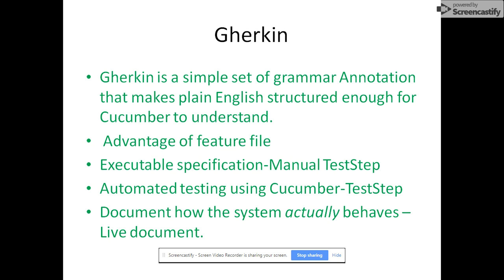Gherkin is a simple set of grammar annotations that make plain English structured enough for Cucumber to understand. There are rules: you write Given, When, Then in that form. At the top there should be a Feature, and within that, Scenarios. One scenario is essentially one test case, and a test case can be run with multiple examples — meaning multiple sets of data, which we'll learn about in the next session.